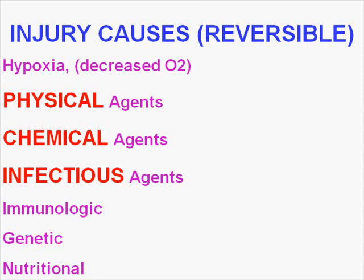Additional causes include decreased oxygen or hypoxia, decreased nutrients, immunologic causes, genetic causes, and nutritional causes. Not all of these are completely separate categories, but thinking in terms of physical, chemical, and infectious covers the three main ones.